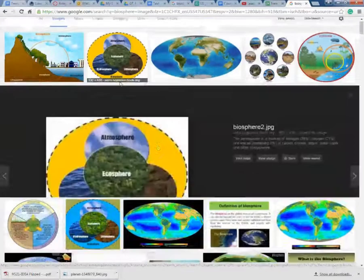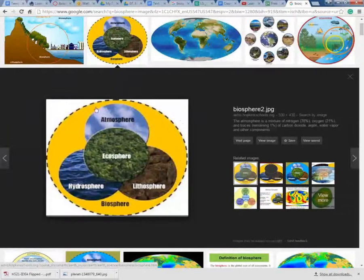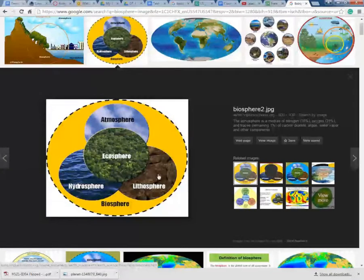Oh, this one's kind of an interesting one. I like this one. So it's kind of talking about how this whole thing can encompass the biosphere, and then within that are specific pieces. And they use trees here as an ecosphere. Lithosphere is below the Earth's crust. Hydrosphere is the water.